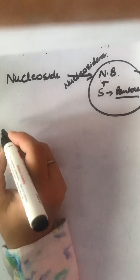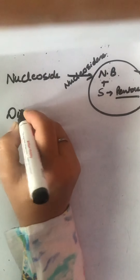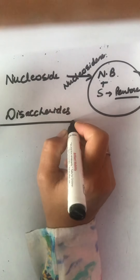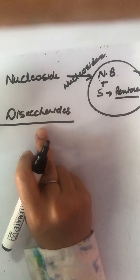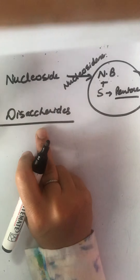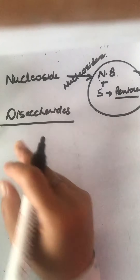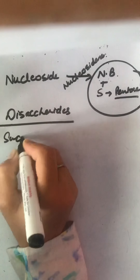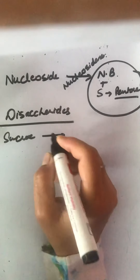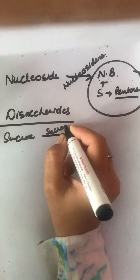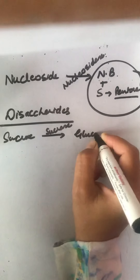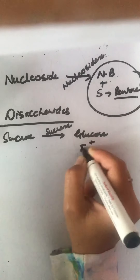Moving on to disaccharides: disaccharides come from carbohydrates in our food and are acted upon by a further set of enzymes. Sucrose is acted upon by sucrase and converted to glucose as well as fructose.